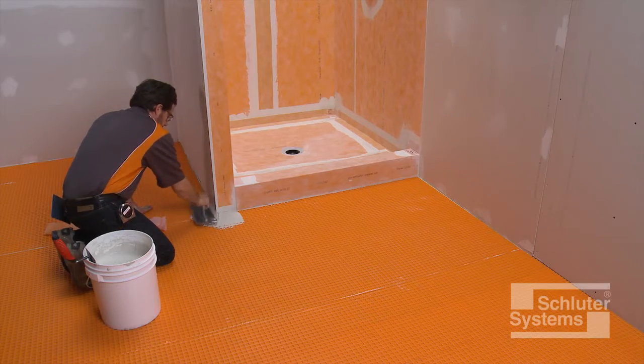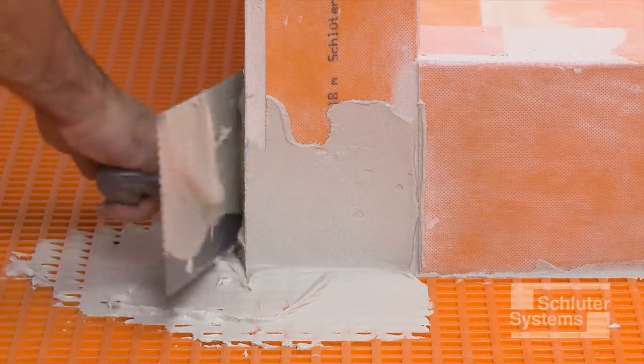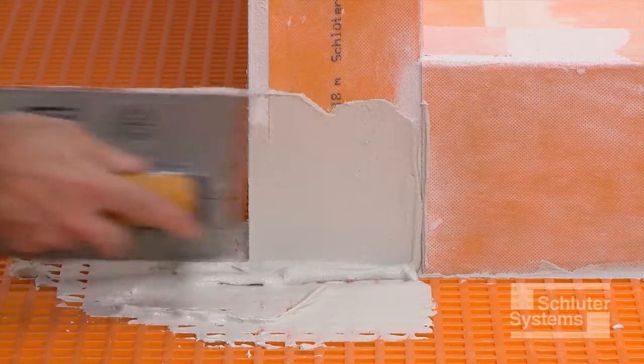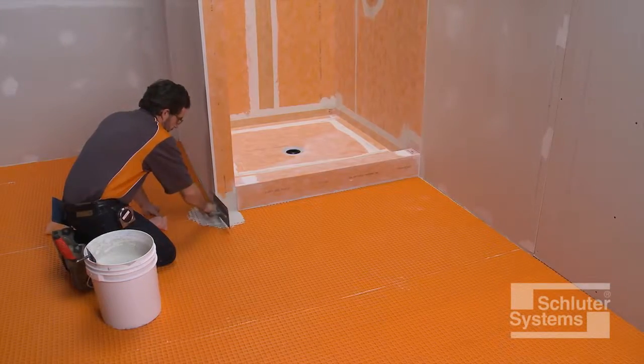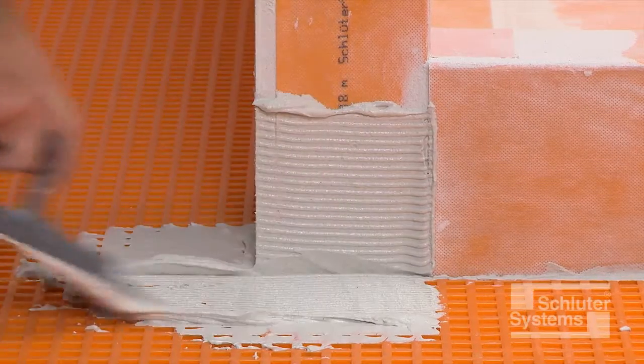Apply unmodified thin-set mortar to the area where the Schluter-KERDI carrick pre-formed corners are to be installed. Fill the cavities in the DITRA matting and comb additional mortar using the notched side of the trowel.